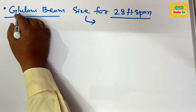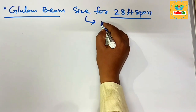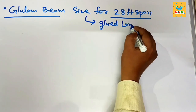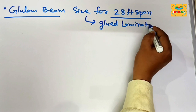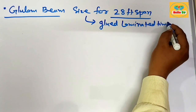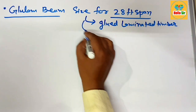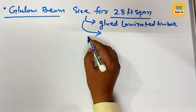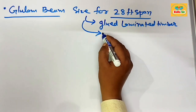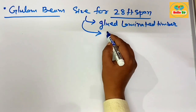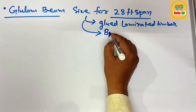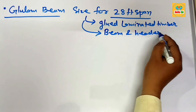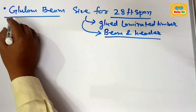First, let's define what a glulam beam is. It stands for glue laminated timber, which is made by sandwiching multiple layers of thin sheets of wood with adhesive material. It is an engineered wood product of high strength, used as beams and headers in building construction.